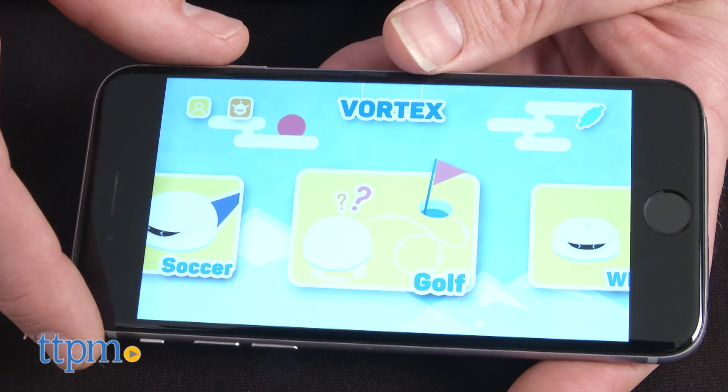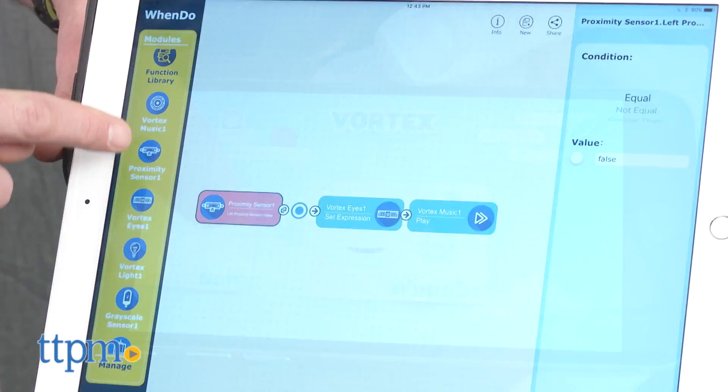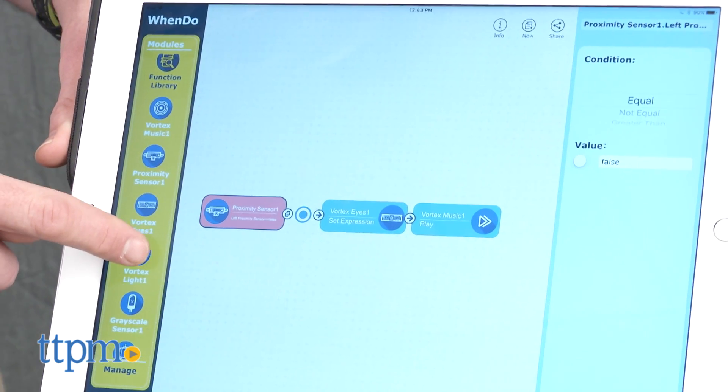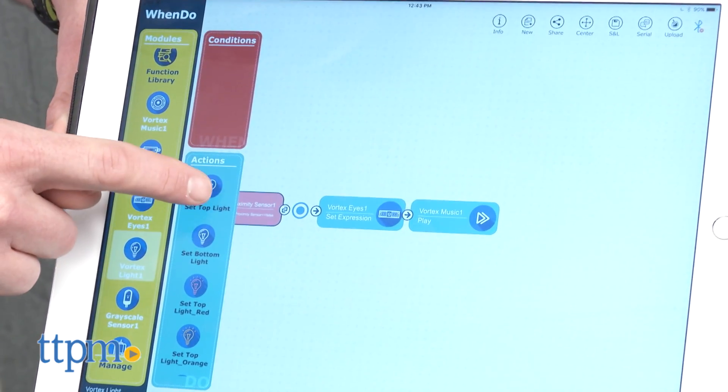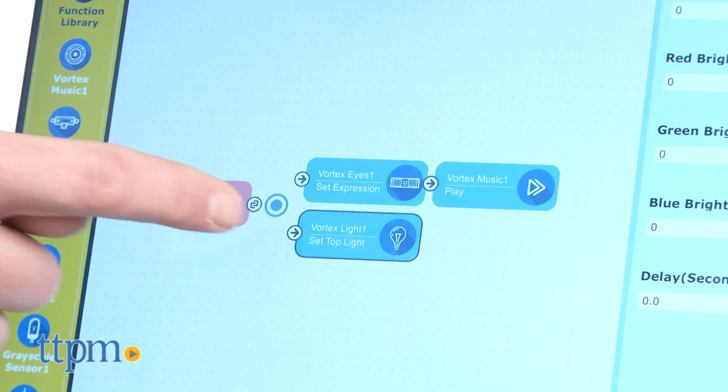I used to buy programming magazines and faithfully retype dozens of lines of code to make simple programs. Now kids can begin understanding basic logic by using the Visual Wendoo app for iPad or Arduino and Scratch on a PC or a Mac.